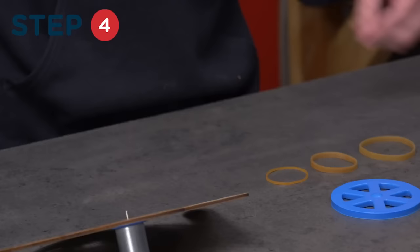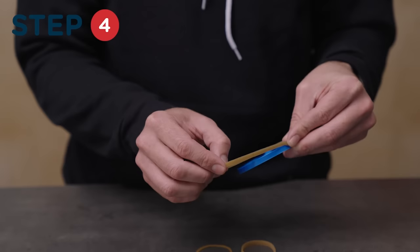Find your flywheel and stretch your largest rubber band over the flywheel so it sits flat in the outer groove.